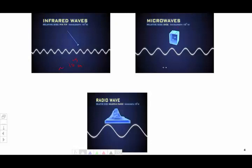The microwave radiation has a wavelength range of about 10 to the power minus 3 meters, which is in the range of the size of a dice.